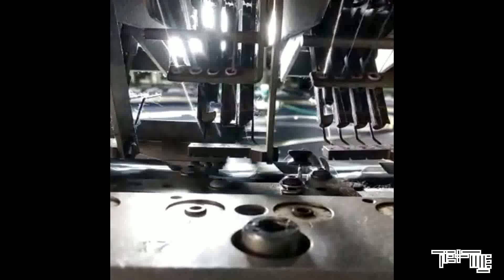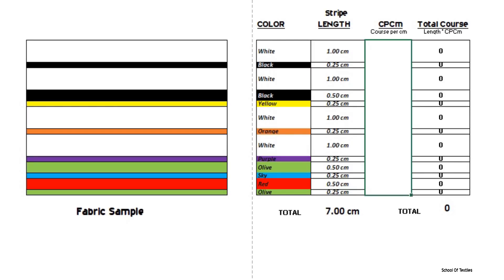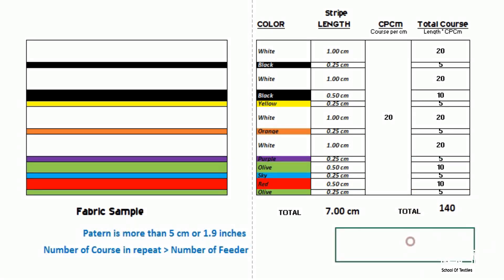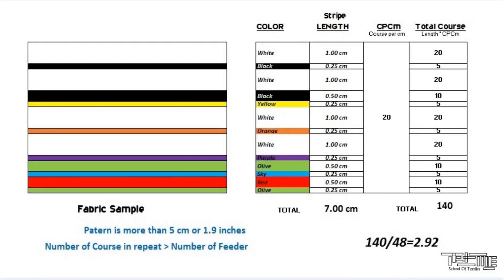To start production, we first need to know how many feeders need to be activated and which finger gets which color of yarn. A 48-feeder auto stripe machine is generally available on the market, and we will use it as a reference. Here is a sample fabric — let's say courses per centimeter is 20, giving us a pattern of seven centimeters with 140 courses. Since a normal circular machine has an average of 90 feeders and cannot produce more than a 5-centimeter pattern, an auto stripe machine is required.